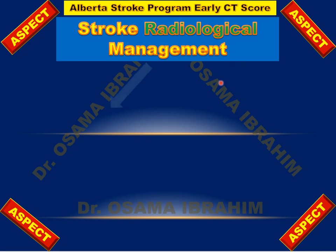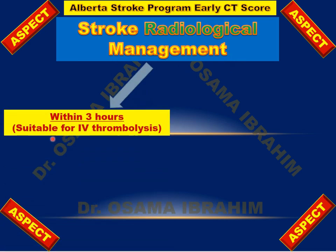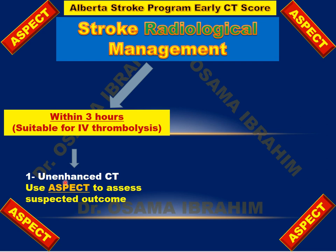Regarding stroke radiological management: within three hours from onset, the patient can be evaluated for intravenous thrombolysis suitability using unenhanced CT combined with the ASPECTS score. If the score is 8 or 9, the outcome is expected to be good. However, if it is less than or equal to 7, intravenous thrombolysis is not advised because it can cause hemorrhage.